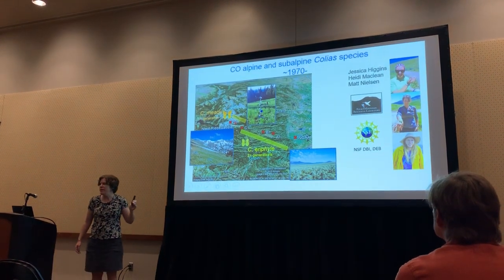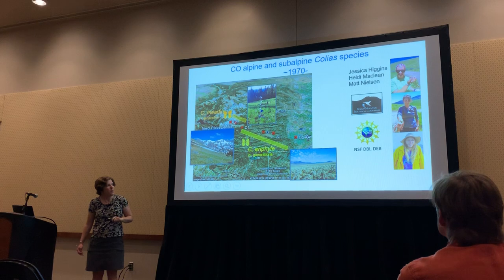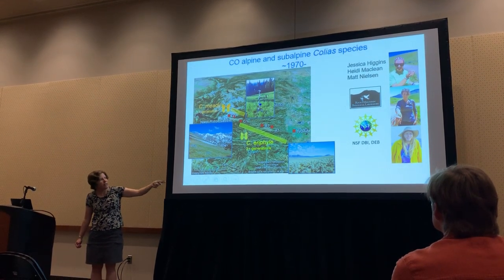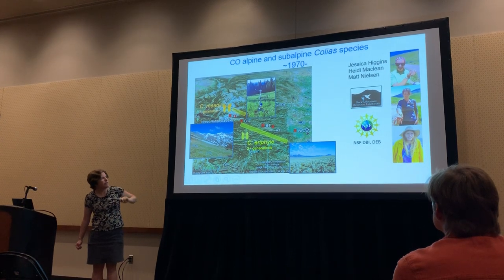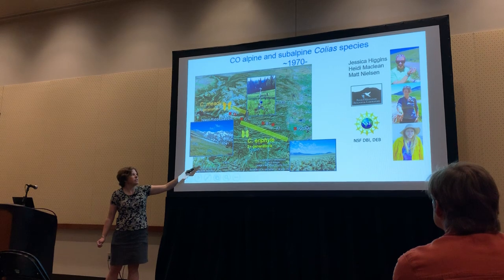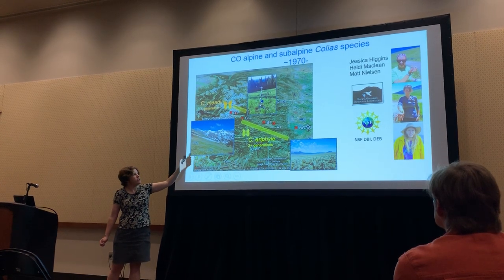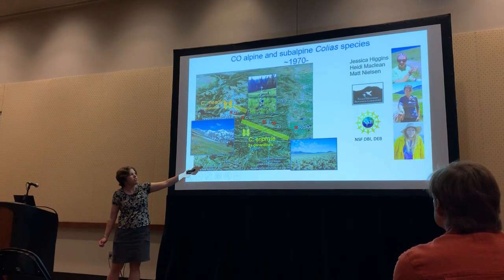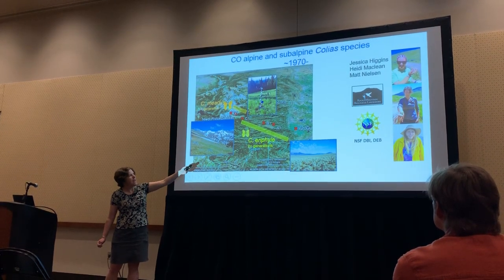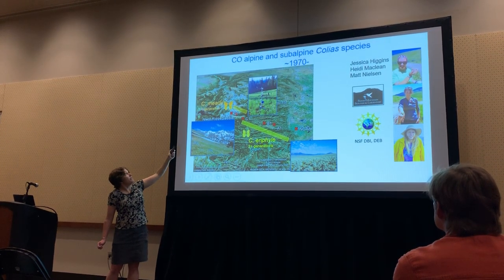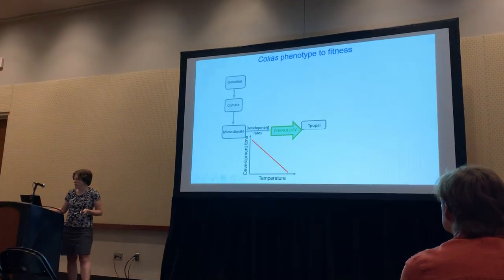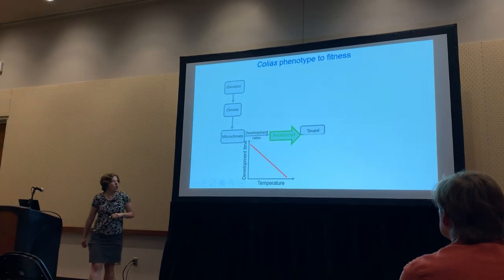We can run that model across grid cells to look at demography across landscapes and distributions. We've been focusing on these Colorado butterflies — I want to thank lab members for collecting field and lab data, and NSF for funding. We're focusing today on Coleus eryphile, the subalpine species with at least two generations, studied along an elevation gradient at Niwot Ridge, and I'll briefly mention the high elevation species Coleus medii, which has only a single generation.